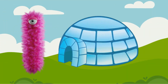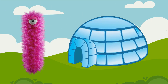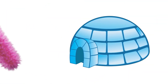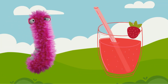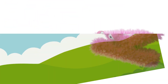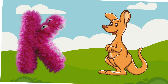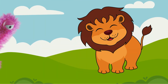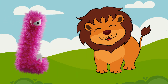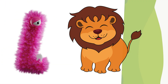I is for igloo, i-i-igloo. J is for juice, ju-ju-juice. K is for kangaroo, k-k-kangaroo. L is for lion, l-lion.